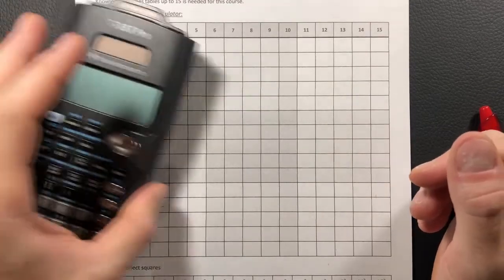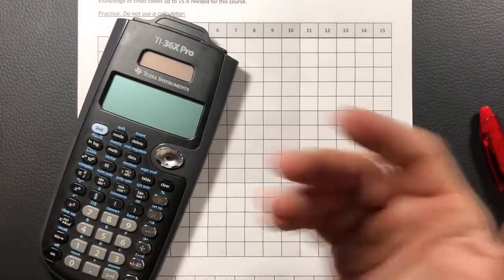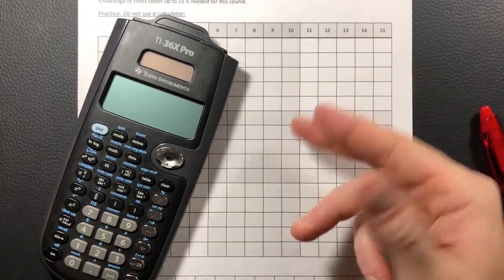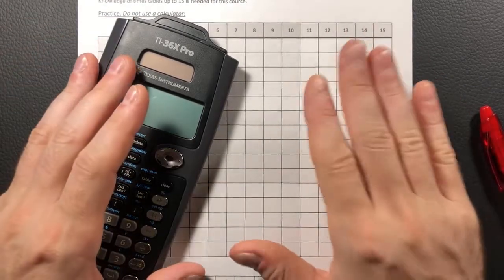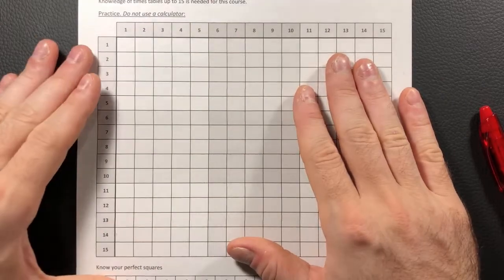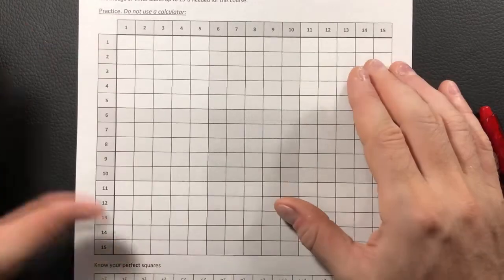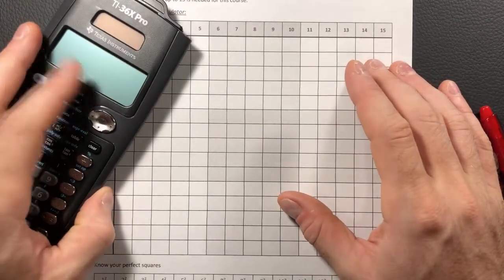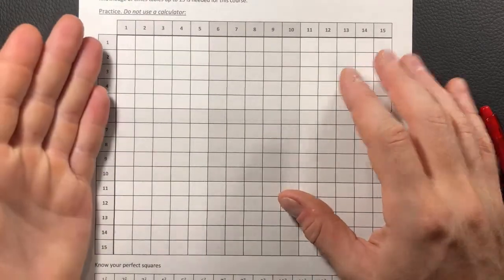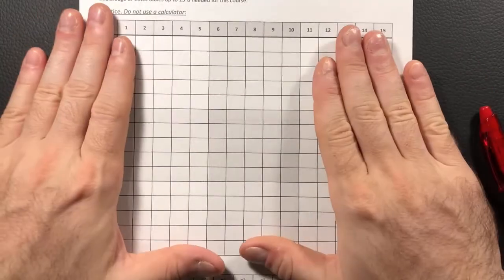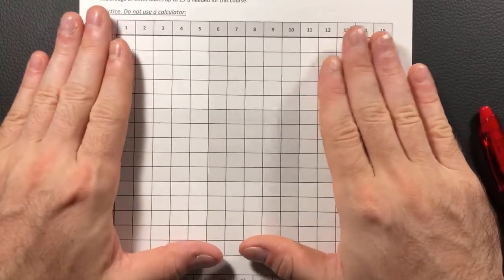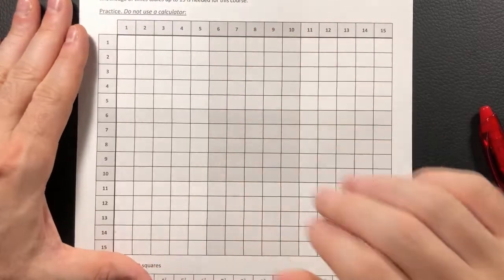Now albeit we can pull out something like this and we can figure out what let's say 11 times 13 is, we want to be able to know what these are offhand up to about 15. If it's something 16 and beyond, the general expectation is that you will be able to use a calculator. We know that yes you are able to do this sheet using a calculator, but you want to be able to try and train your mind to be able to do these by hand.